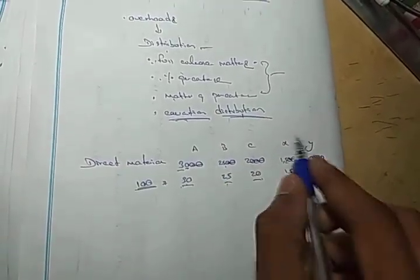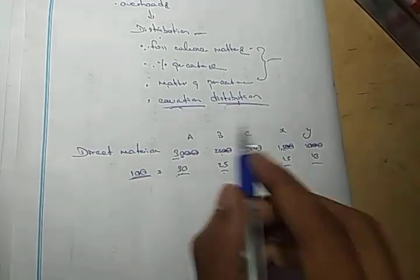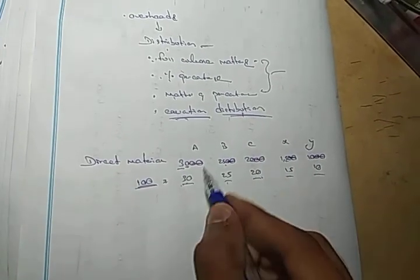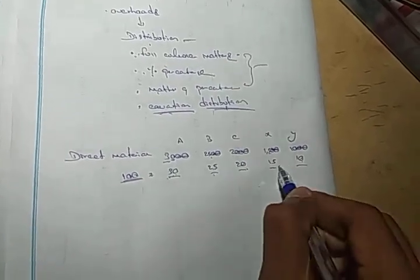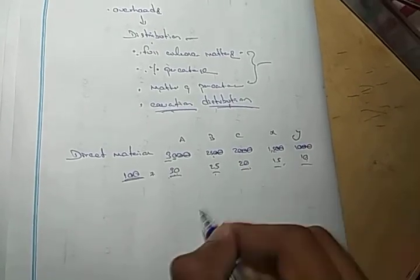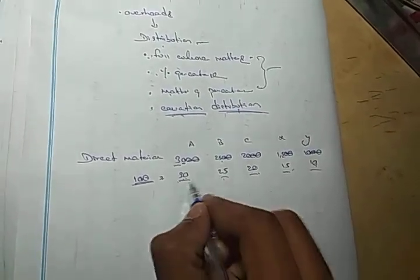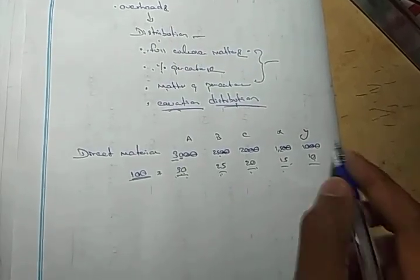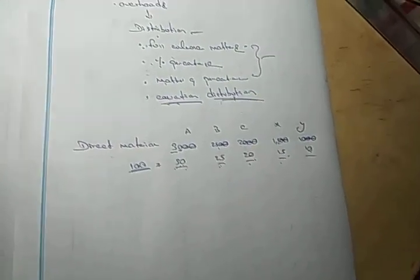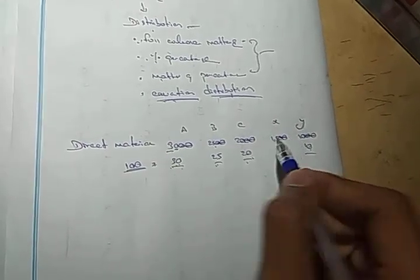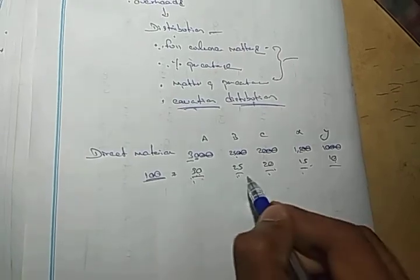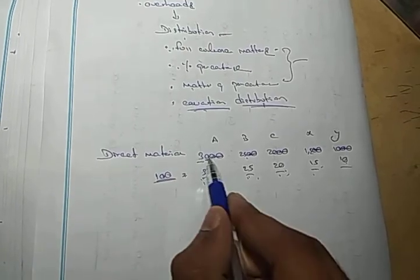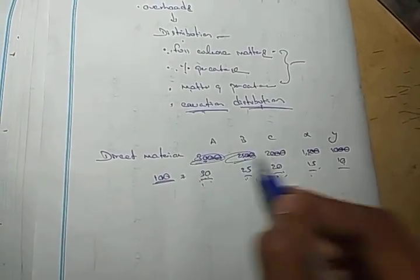Equation is equal. We can see the ratios. Common is 0. Ratios are 30, 25, 25, 10. This is a lengthy process. This is direct material. The ratio is not equal — it is time to change.